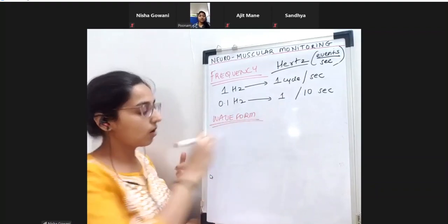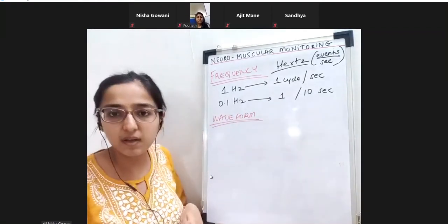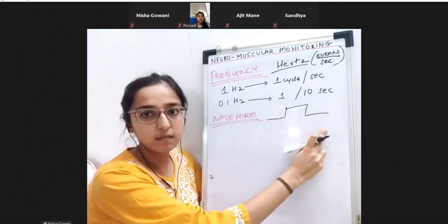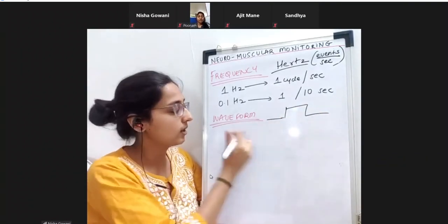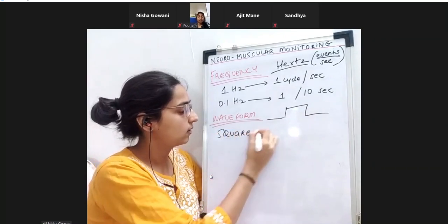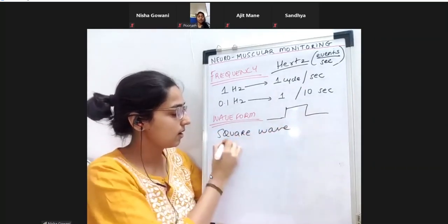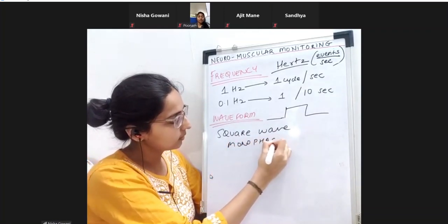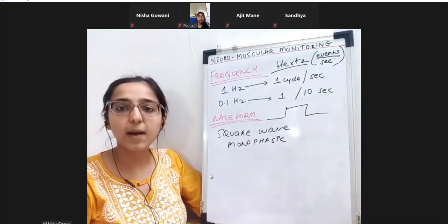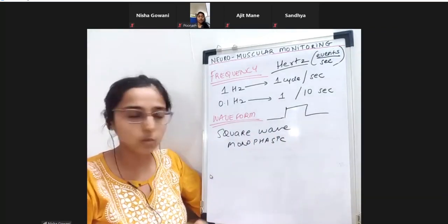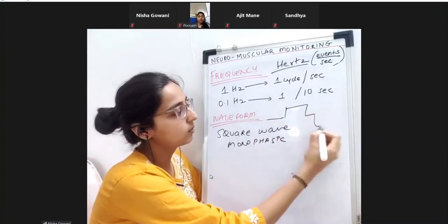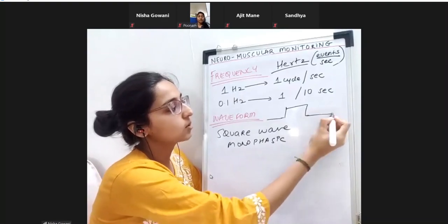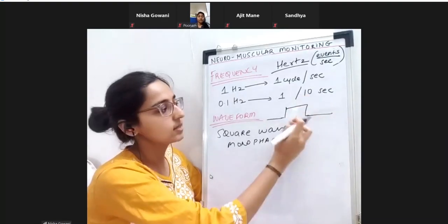What is the waveform of the current we are delivering? The waveform from a nerve stimulator is a square wave, and it is monophasic - going only in one direction. If it were biphasic, the picture would look different. We only need to remember it is a monophasic square wave pattern.